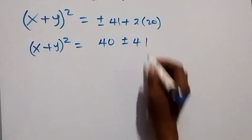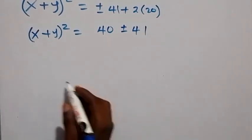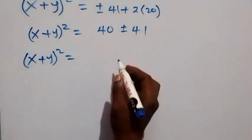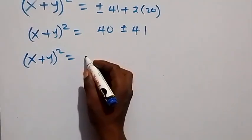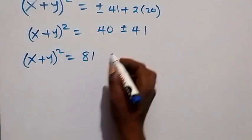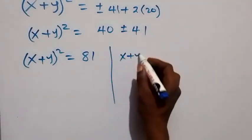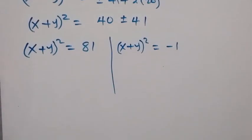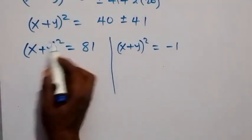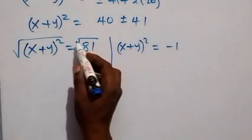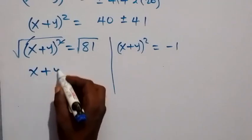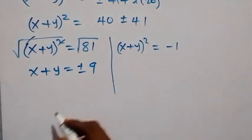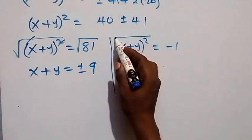This gives us two cases. The first case: x plus y all squared equals 40 plus 41 equals 81. Taking the square root on both sides, x plus y equals plus or minus 9.